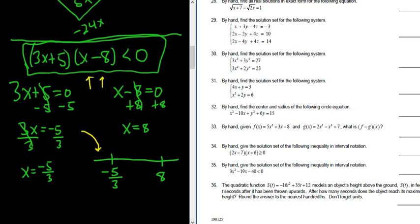If it's true, you would shade there, you would shade in this area. If it's not true, you wouldn't shade. Then you would pick a number over here, like 0. You plug it into your inequality. If it's true, you shade in this general area between the negative 5 thirds and the 8. If it's not true, then you don't shade.